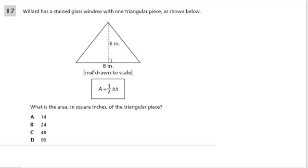In our next problem, we have a triangle. And they give us the formula. We were told Willard has a stained glass window with one triangular piece as shown below. What is the area in square inches of the triangular piece? Now you see this dotted line right here makes it look like we have two separate pieces. This whole shape is the piece. And here, the formula is correct. It's given as area equals one half of the base times the height, or you can think of it as base times height over two.